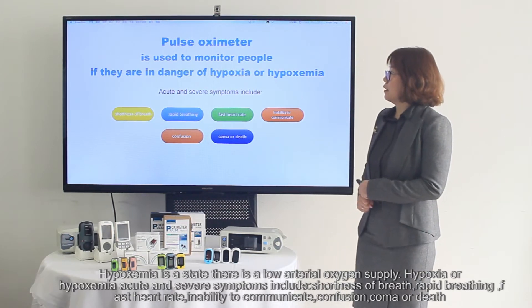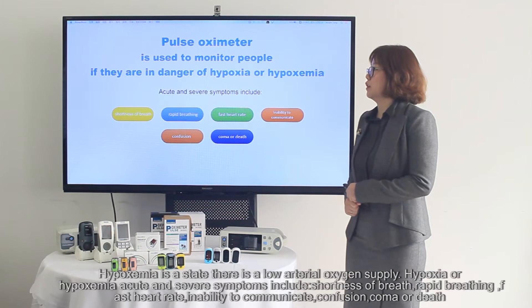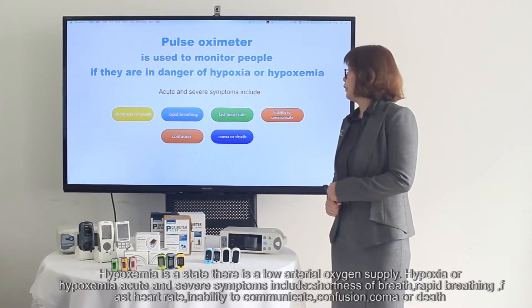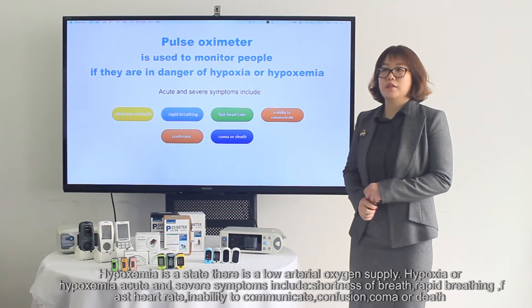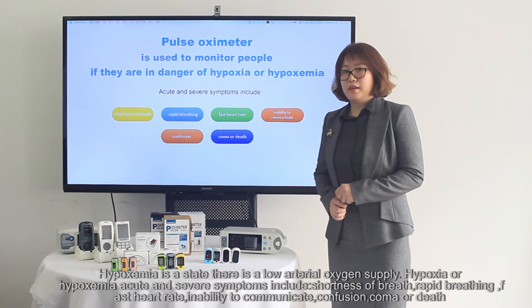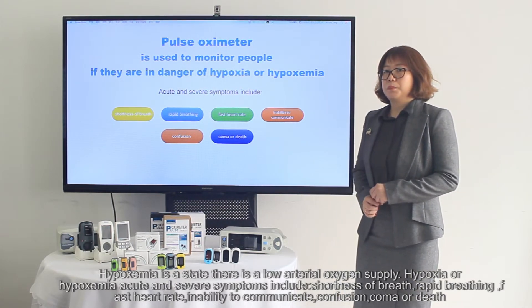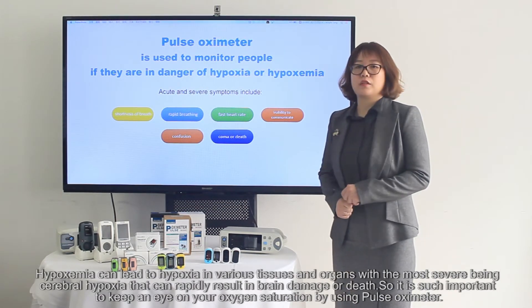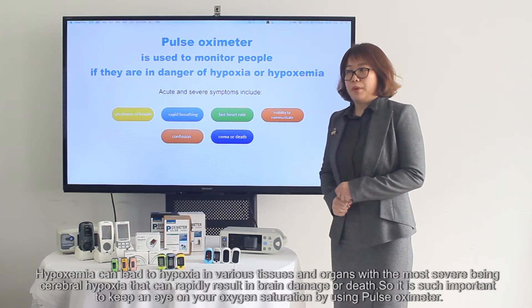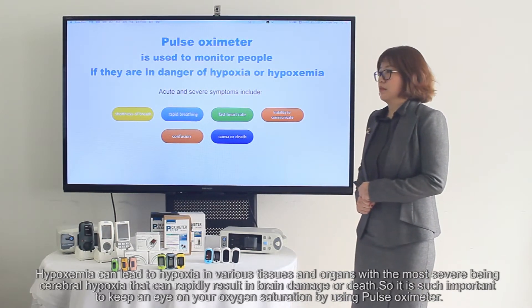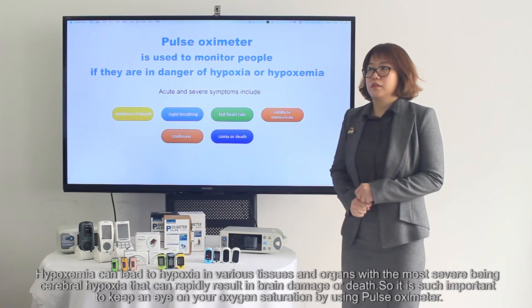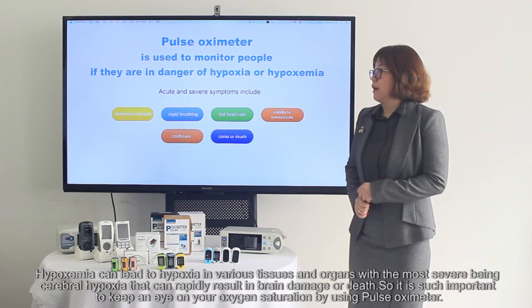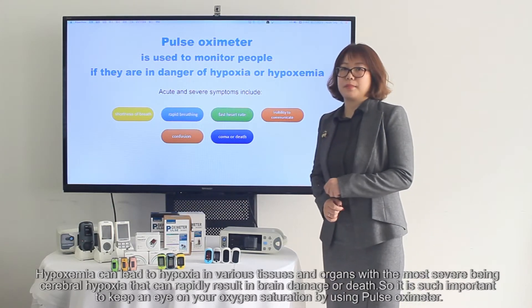Hypoxia or hypoxemia acute and severe symptoms include shortness of breath, rapid breathing, faster heart rate, inability to communicate, confusion, coma, or death. Hypoxia can cause damage in various tissues and organs, with the most serious being cerebral hypoxia, which can rapidly cause brain damage or death. So it is very important to keep an eye on your oxygen saturation with pulse transmitters.